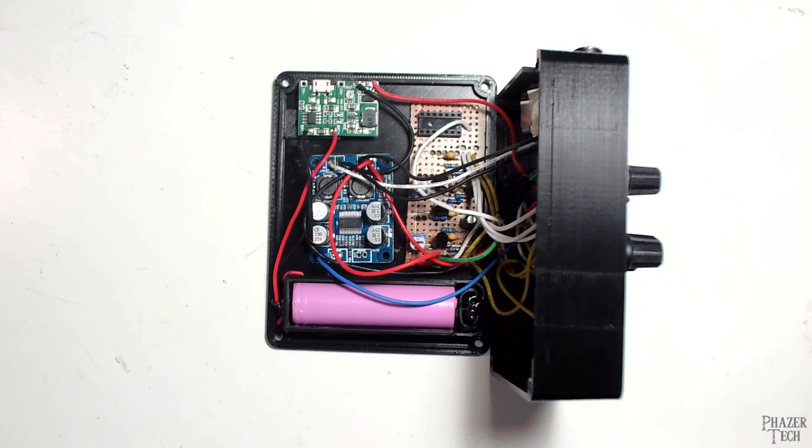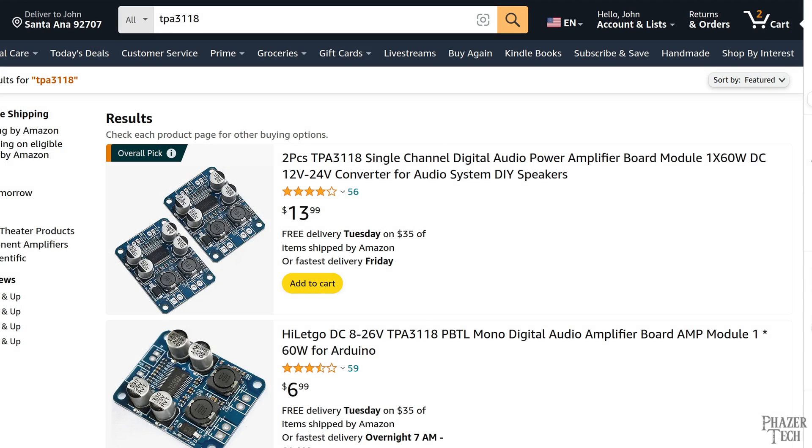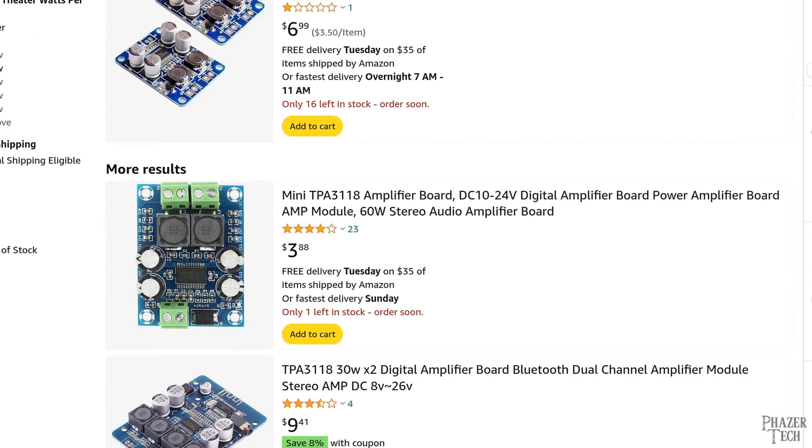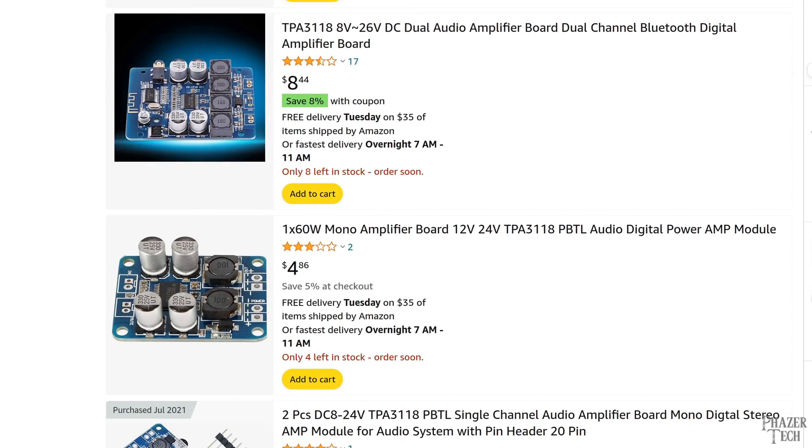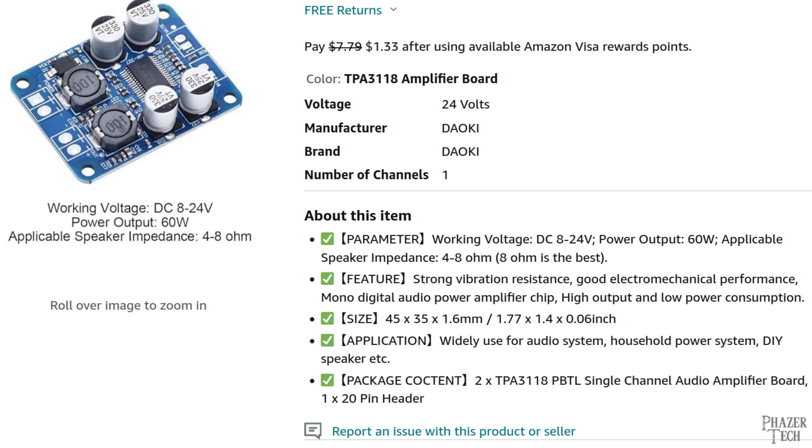Let's start with the power amplifier. So like I said, this is a class D amplifier and it's based around the TPA3118 power amp chip. I was able to get two of these boards for only 8 bucks on Amazon. In case this particular brand is sold out, you can simply search for TPA3118 to find the same boards from other brands. Now the specs for this board list the input voltage can be anywhere between 8 volts and 24 volts, which gives up to 60 watts of power. And the speaker can have an impedance between 4 to 8 ohms.